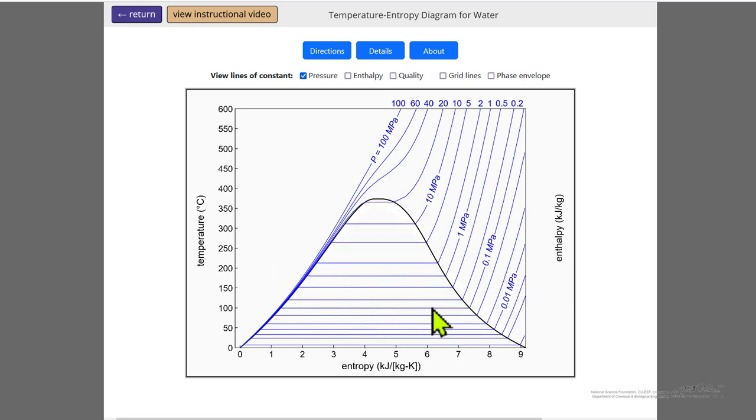Now we have just isobars, and we can more clearly see the behavior, for example, constant pressure in the two-phase region. Let's look at the phase envelope to make clear saturated liquid at lower entropies and saturated vapor at higher entropies. The critical point is the highest temperature where we can't have two phases in coexistence above that temperature.